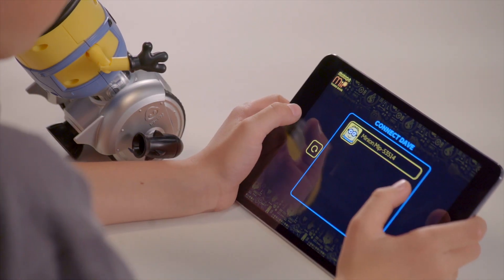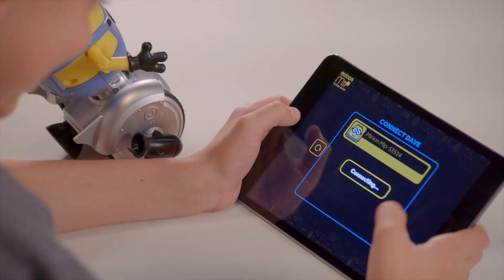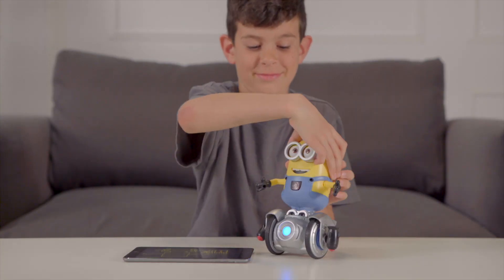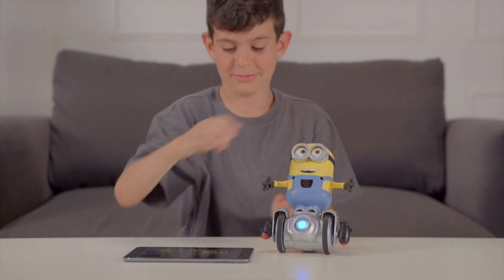Once in the app, it will ask you to connect Turbo Dave to your smart device. In order to connect to the app, your Turbo Dave must be turned on. As long as your Bluetooth is enabled, your Minion Mip should appear.